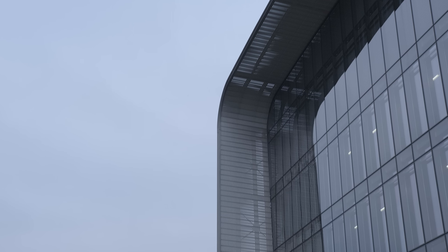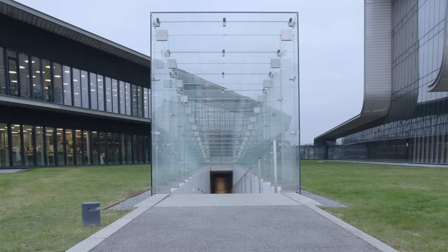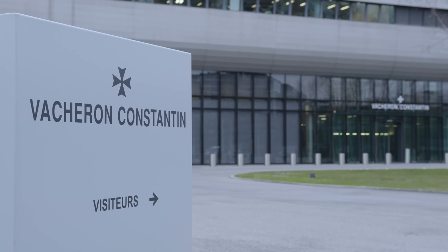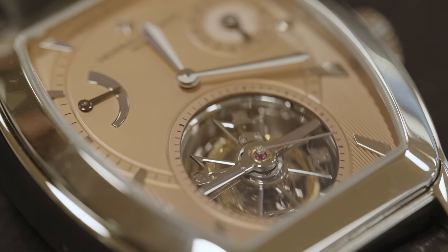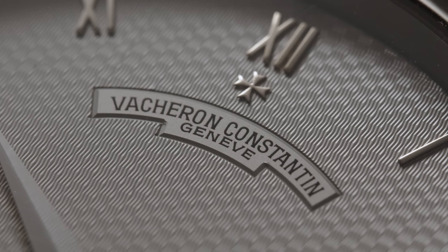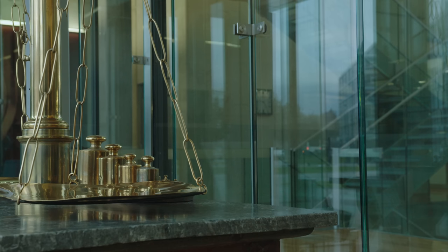Hidden in a world of high-speed automated volume-produced goods, there's an unusual building where things are made very slowly—tiny things, things with parts so small you can barely even see them. Welcome to Vacheron Constantin.